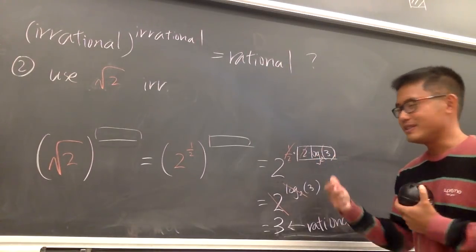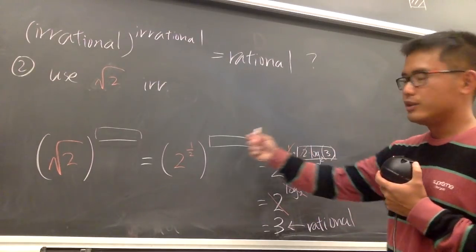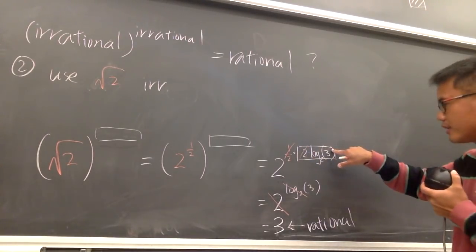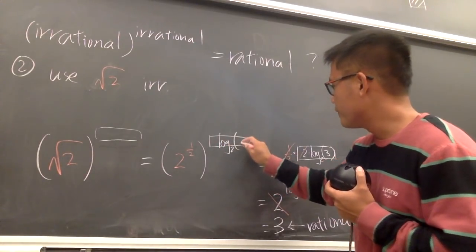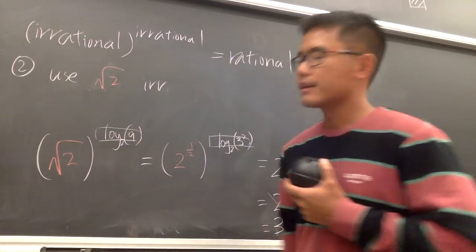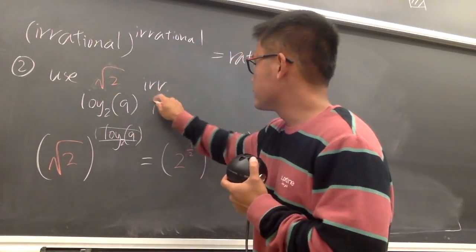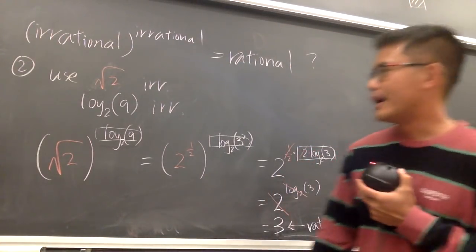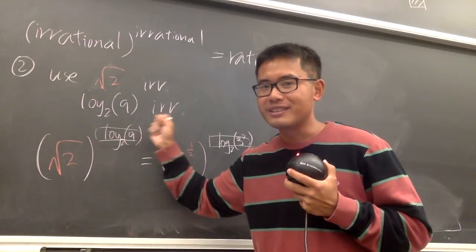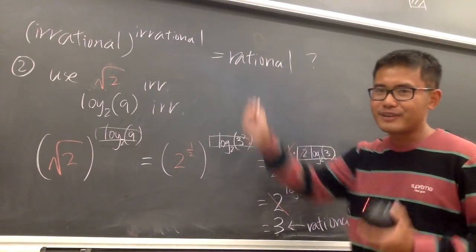This is the second irrational number I needed. We can write 2 · log₂3, or bring the 2 back as an exponent to make it fancier: log₂3 squared, which equals log₂9. So I used square root of 2 for the base, and log base 2 of 9 as the exponent — this is also irrational, which you can prove by contradiction just like with square root of 2. So it is definitely possible to have an irrational raised to an irrational power and get a rational result. Thank you!